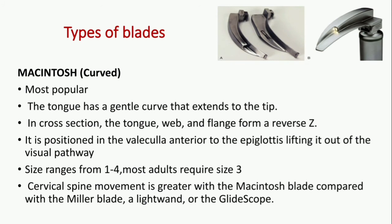The most popular blade is the Macintosh. The tongue has a gentle curve that extends to the tip. In cross-section, the tongue, the web, and the flange form a reverse Z. It is positioned in the vallecula, anterior to the epiglottis, lifting it out of the visual pathway. The size ranges from 1 to 4 and most adults require size 3. Cervical spine movement is greater with the Macintosh blade compared with the Miller blade, a light wand, or the Glidescope.